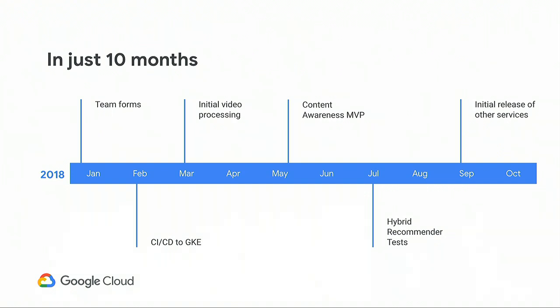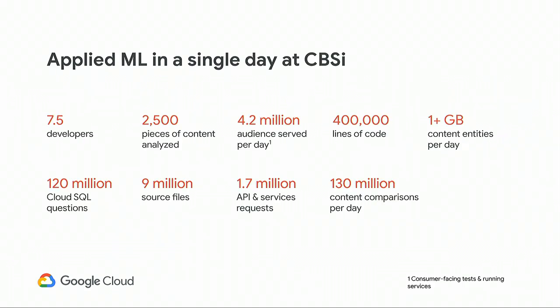The proof was in the production for us. Here's a glance of what the world looks like right now — not so much the values, but really seeing what we're combining across CBS Interactive. We have a living system now in production, and we're able to code, deploy, manage, and deliver with a group of seven and a half people.